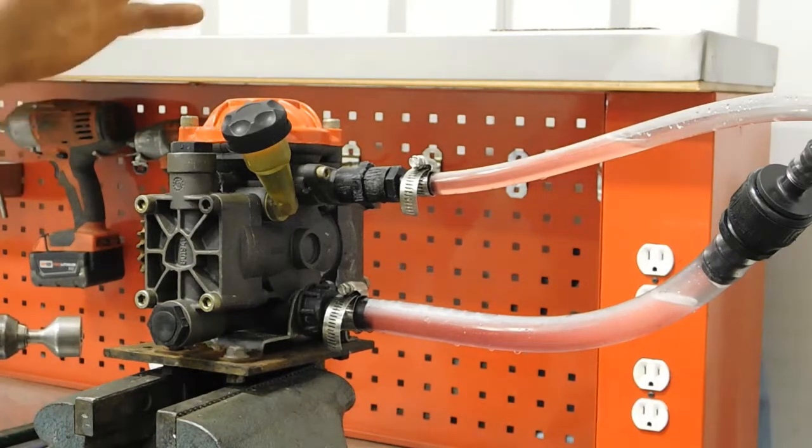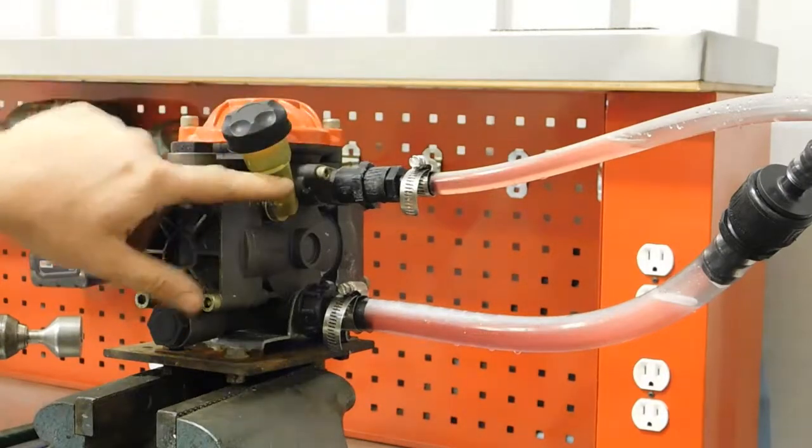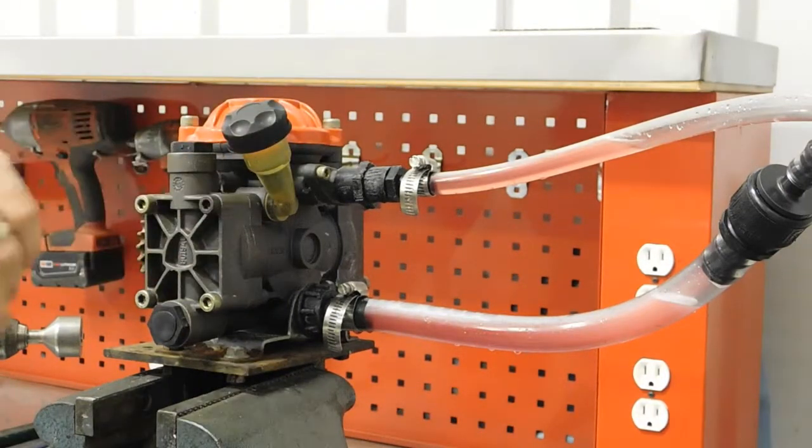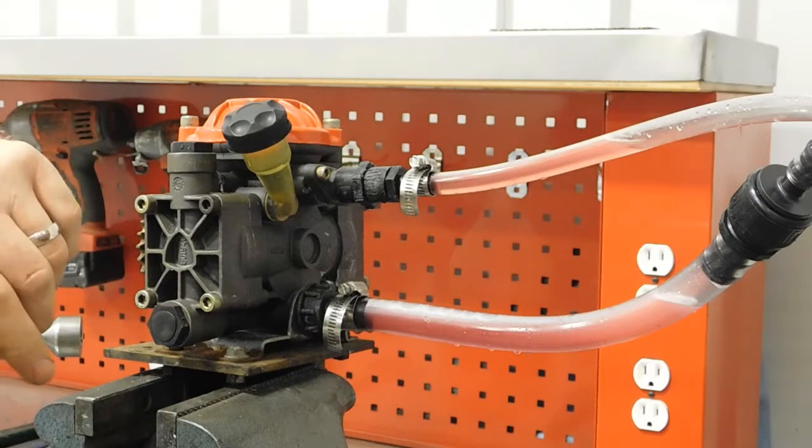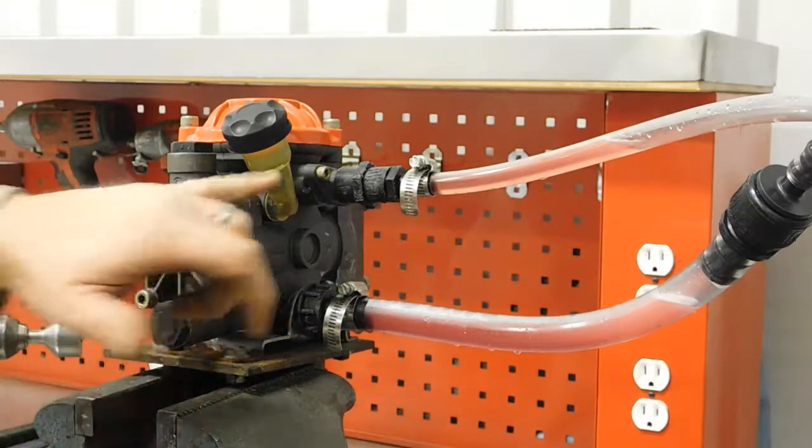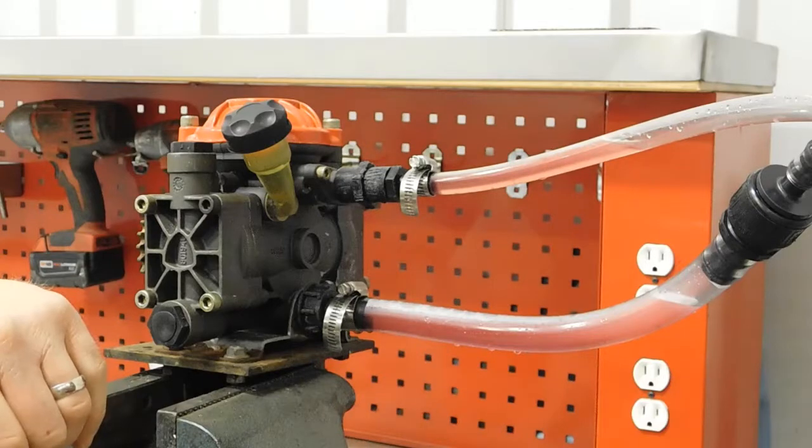I should also mention, since I'm here, non-detergent 30 oil, just like you would use normally in an air compressor. Keep the sight glass full. You want it clean.